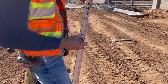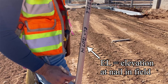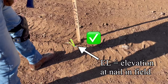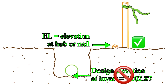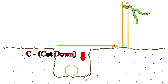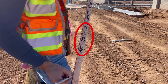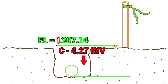Finally, you have an elevation written down. You may have even heard the term hub elevation. This is the elevation at the hub or nail placed as a reference — it is not the design elevation of what is about to be constructed. However, it's from this hub elevation you will either cut downward or fill upward to get to the design elevation. In this case the hub elevation was 1207.14 and we have a cut of 4.27 to get down to the design invert elevation for this spot in the storm drain line of 1202.87.